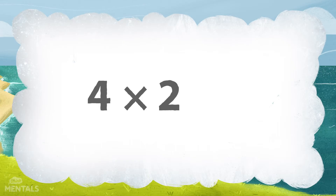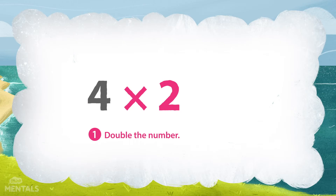Four multiplied by two. So, step one is to double the number. Multiplying a number by two is the same as doubling, and doubling a number means adding it to itself. So, four multiplied by two is the same as four plus four.